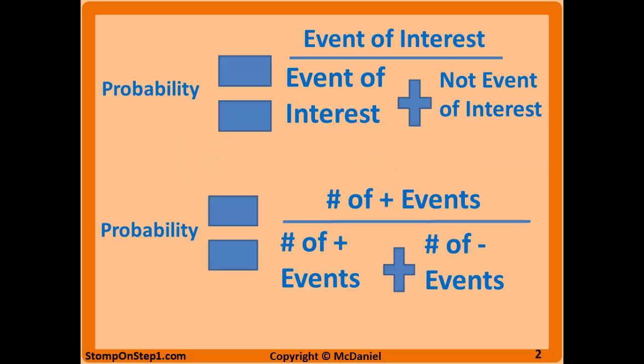You can think of probability as just being percentage. It's the number of occurrences of a certain outcome compared to the total number of events measured. It's going to range between 0 and 1 or 0% and 100%. So you can think of it as the event of interest divided by the number of times the event of interest happened plus the number of times the event of interest didn't happen.